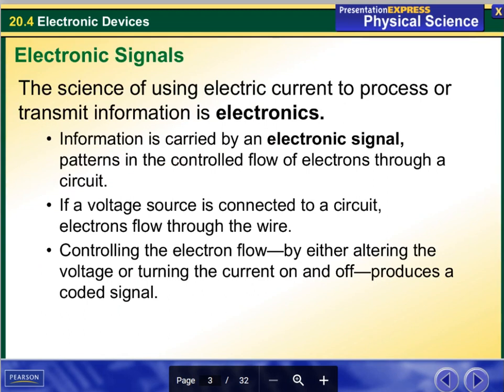The science of using electric current to process or transmit information is called electronics. Information is carried by an electronic signal, patterns in the controlled flow of electrons through a circuit. If a voltage source is connected to a circuit, electrons flow through the wire. Controlling the electron flow by either alternating the voltage or turning the current on and off produces a coded signal.